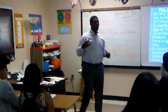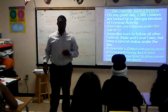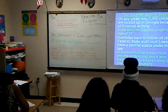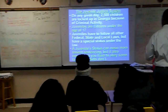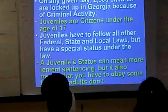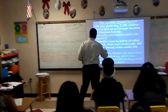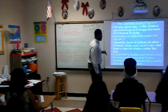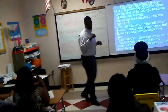All right, so juvenile justice system. On any given day, 2,500 children are locked up in Georgia because of criminal activity. Juveniles are citizens under the age of 17. They have to follow all federal, state, and local laws, but have a special status under the law. Their consequences aren't going to be as bad as a regular adult. Juvenile justice can mean more lenient sentencing, but it also means you have to obey some laws that adults don't.